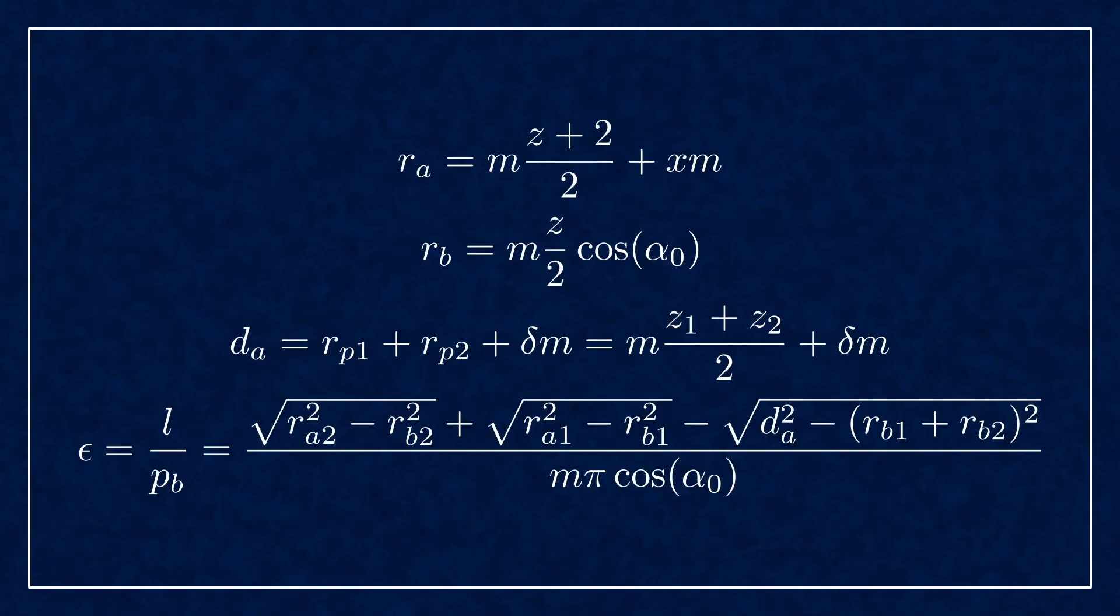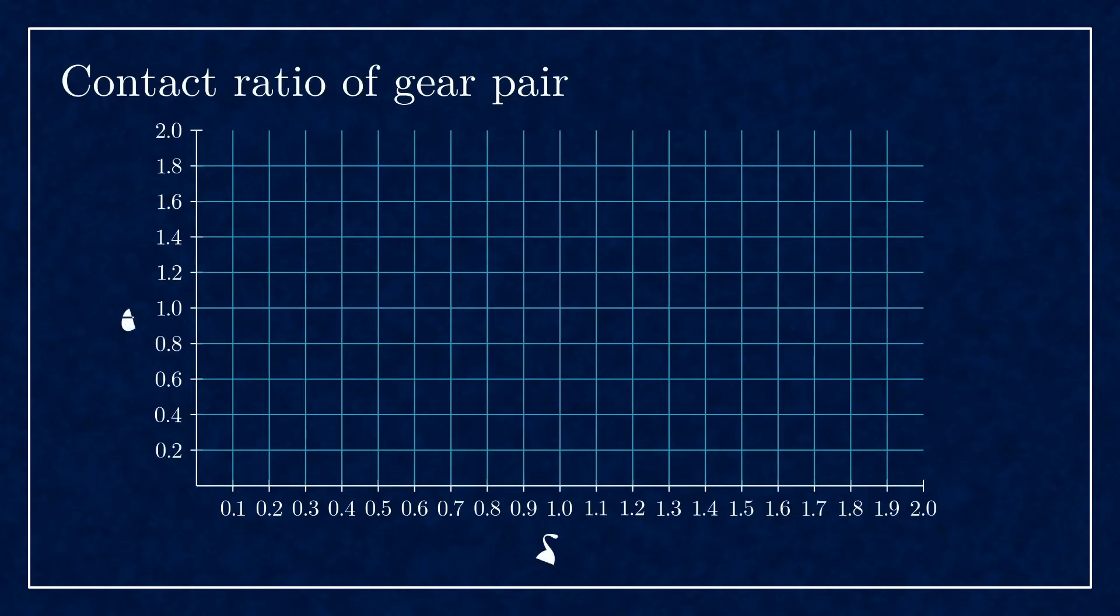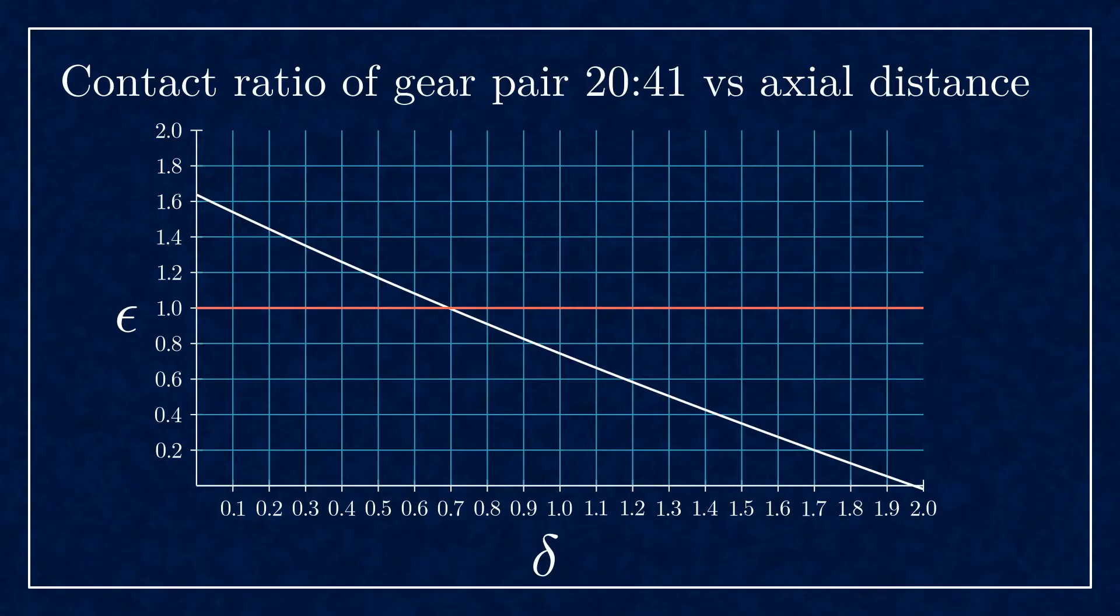Let's take an example here. Here's how the contact ratio changes with axial distance. Delta is the additional distance as a coefficient of the module, and on the y-axis you can see the contact ratio. With this particular setup you can go up to about 0.7 module before you lose contact.